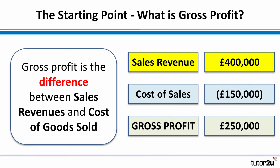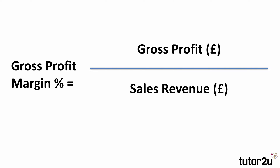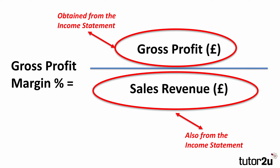That's not the total profit of the business because we need to take off other costs such as overheads, but it's a really important measure of profitability. The gross profit margin is expressed as a percentage, and the formula is the gross profit number divided by the sales revenue number. We get both of those pieces of data from the income statement — sales revenue and gross profit, which is sales revenue less cost of sales.